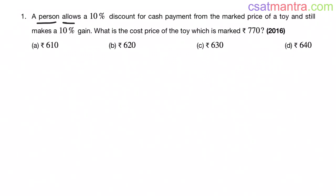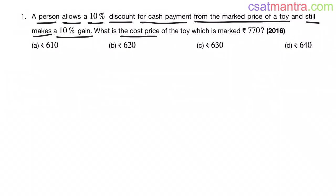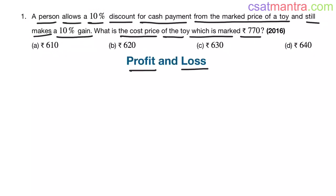A person allows a 10% discount for cash payment from the marked price of a toy and still makes a 10% gain. What is the cost price of the toy which is marked 770 rupees? This question is from the profit and loss chapter and it was asked in 2016.